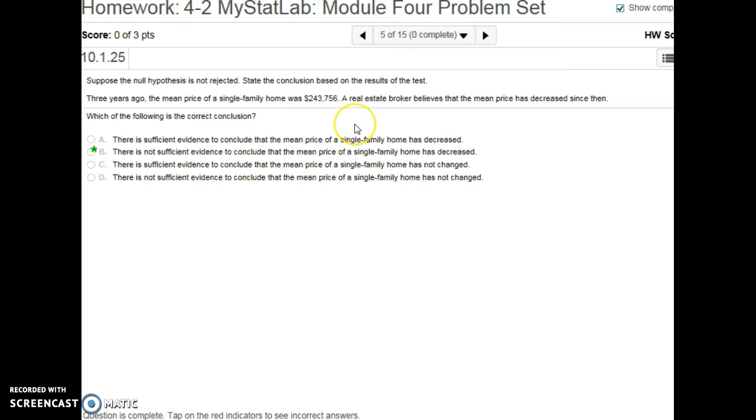And then replace it with the alternative. And number five here, again, is similar to number four. So three years ago, this was the mean price of a single-family home. So our null hypothesis is that the mean equals this. Our alternative is that the mean is less than that, because we have decreased. So if the null hypothesis is not rejected, that means there's not enough evidence to reject the null. There's not sufficient evidence to conclude that it has actually decreased.